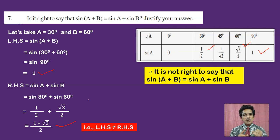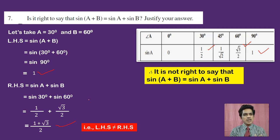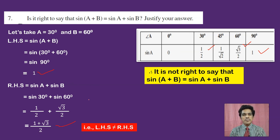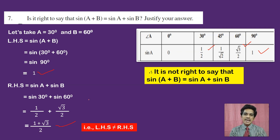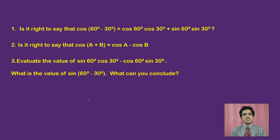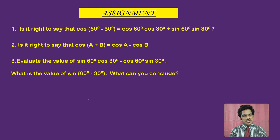Since we found a counter-example where LHS does not equal RHS, we conclude that it is not right to say that sin(A + B) equals sin A + sin B. As an assignment, take A = 60 degrees and B = 30 degrees and verify the same for cos(A + B) = cos A + cos B. Solve these problems and share your answers. Thank you.